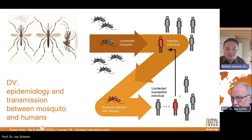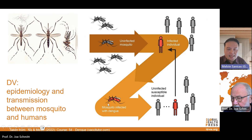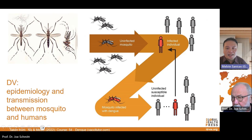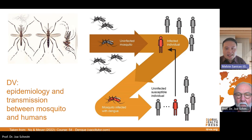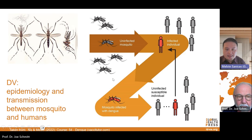Mosquitoes become infective after an incubation period of around 8 to 12 days, and they can transmit the dengue virus for the rest of their life, which is just around one month. The peak of the dengue epidemic period is during the rainy season in countries where dengue is a major problem.